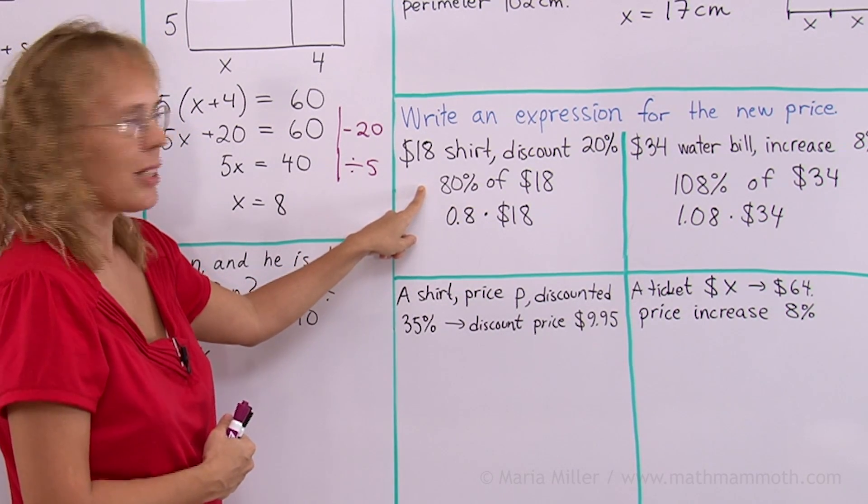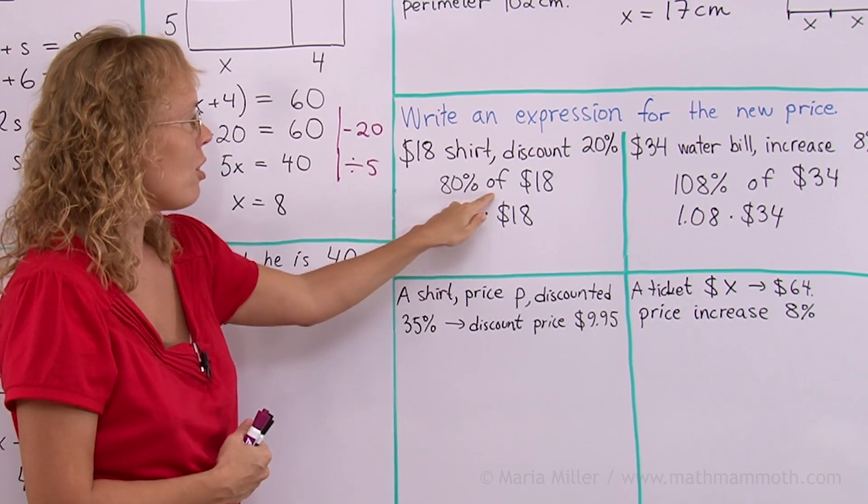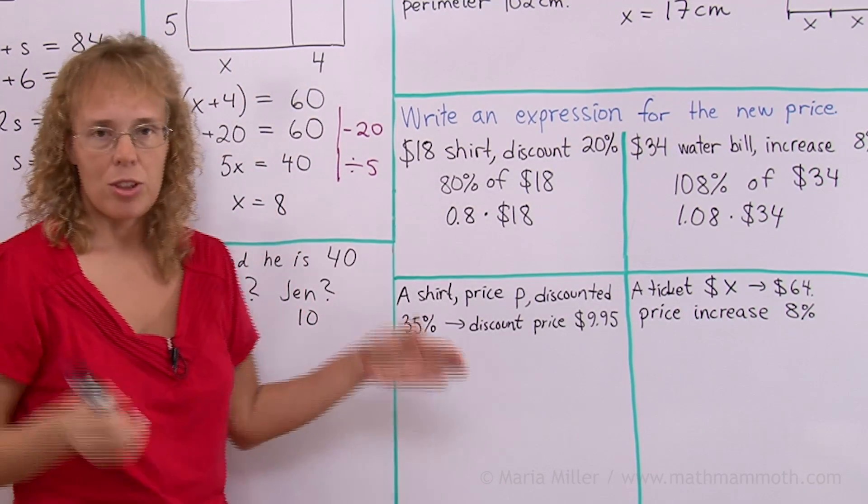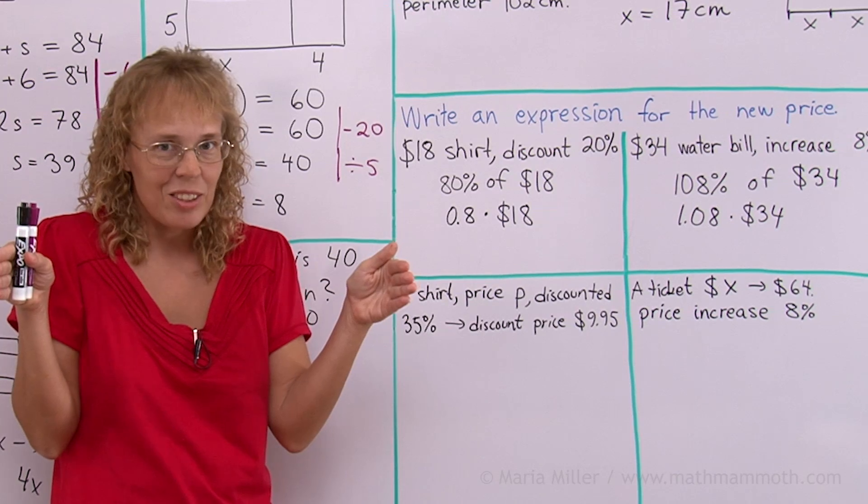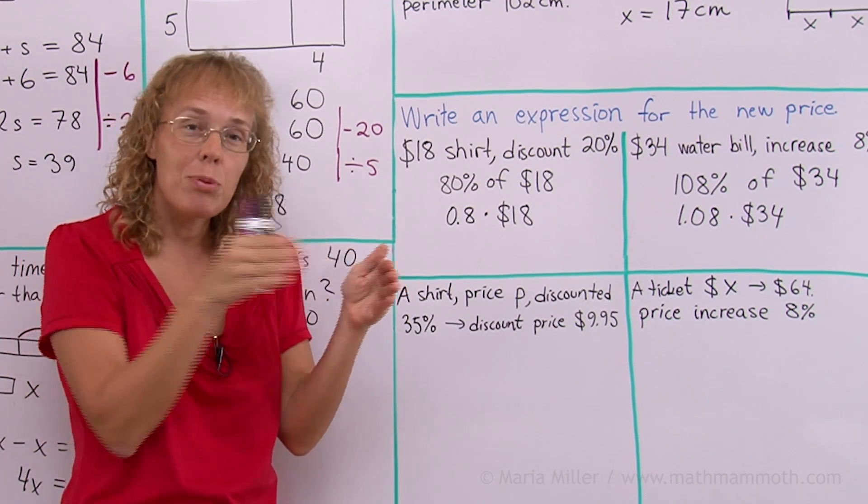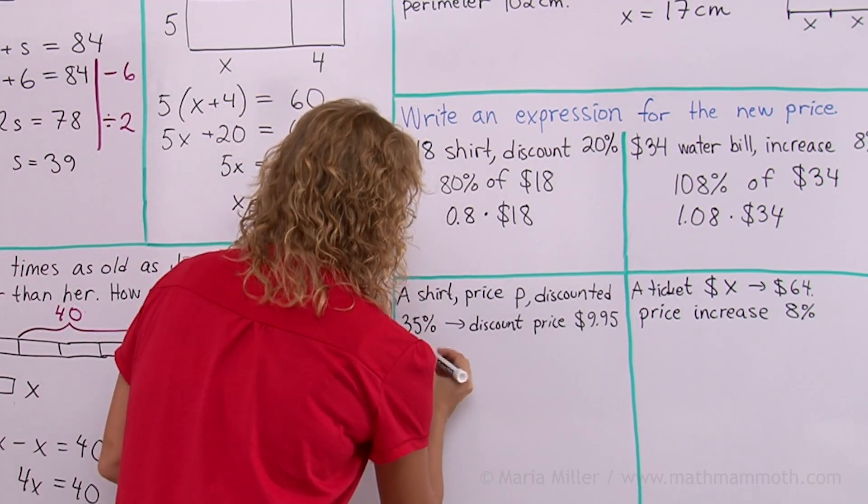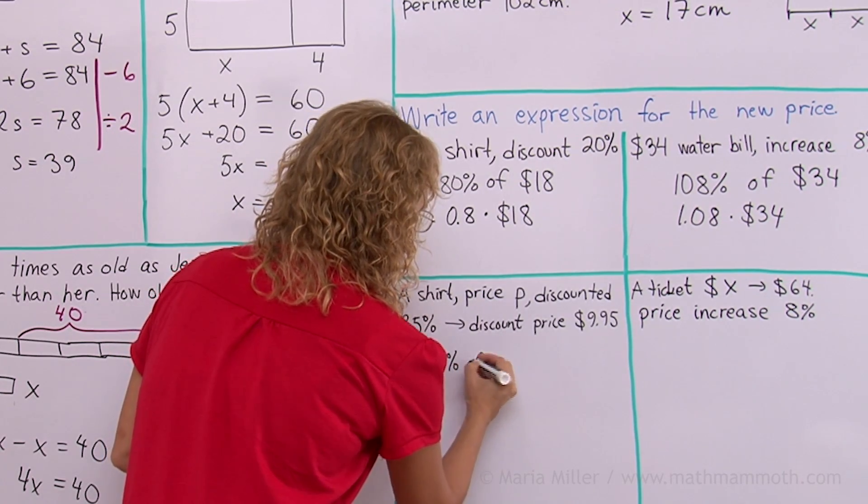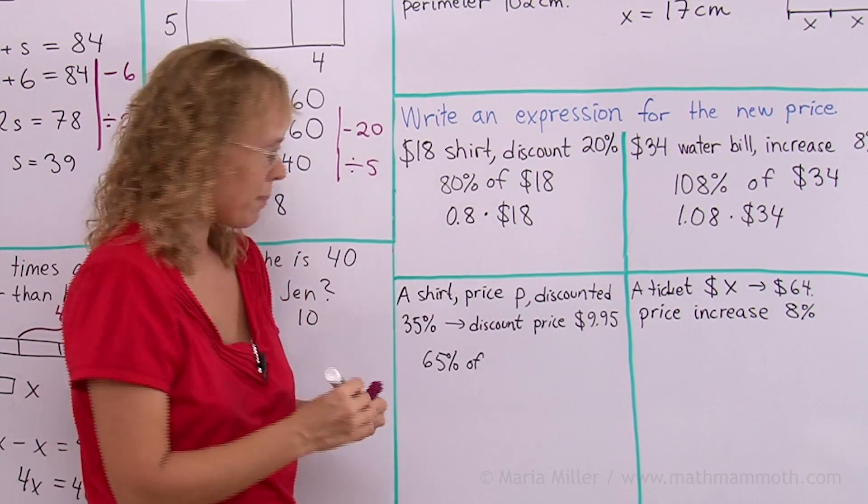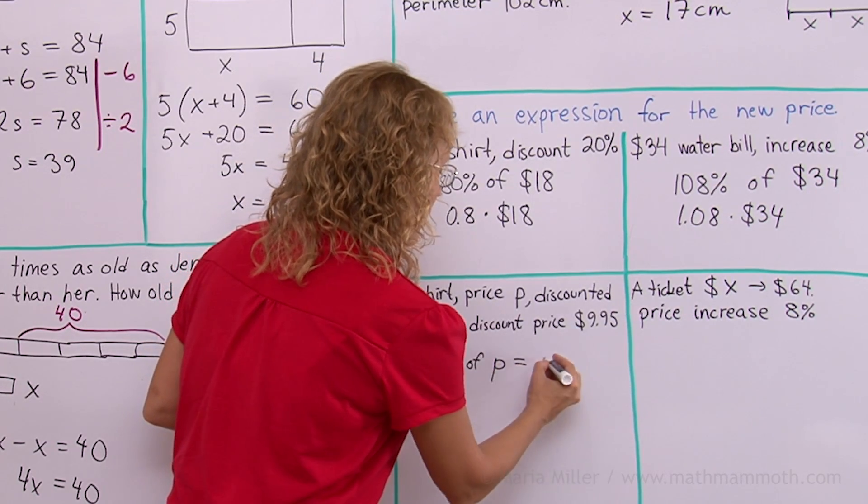When a shirt is discounted by some amount, then we will write an expression where the percentage of the original price is the discounted price. And here we have the shirt. Original price is of course 100% of the price. Then it is discounted by 35%. So 65% of the price is left. Right? 65% of the original price is the discounted price.